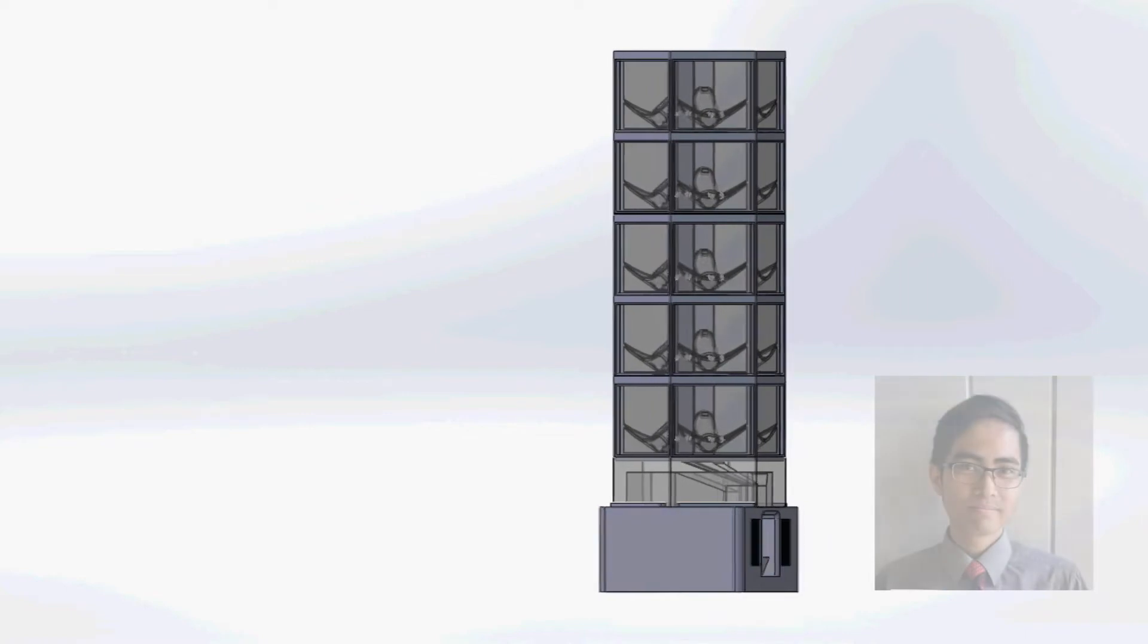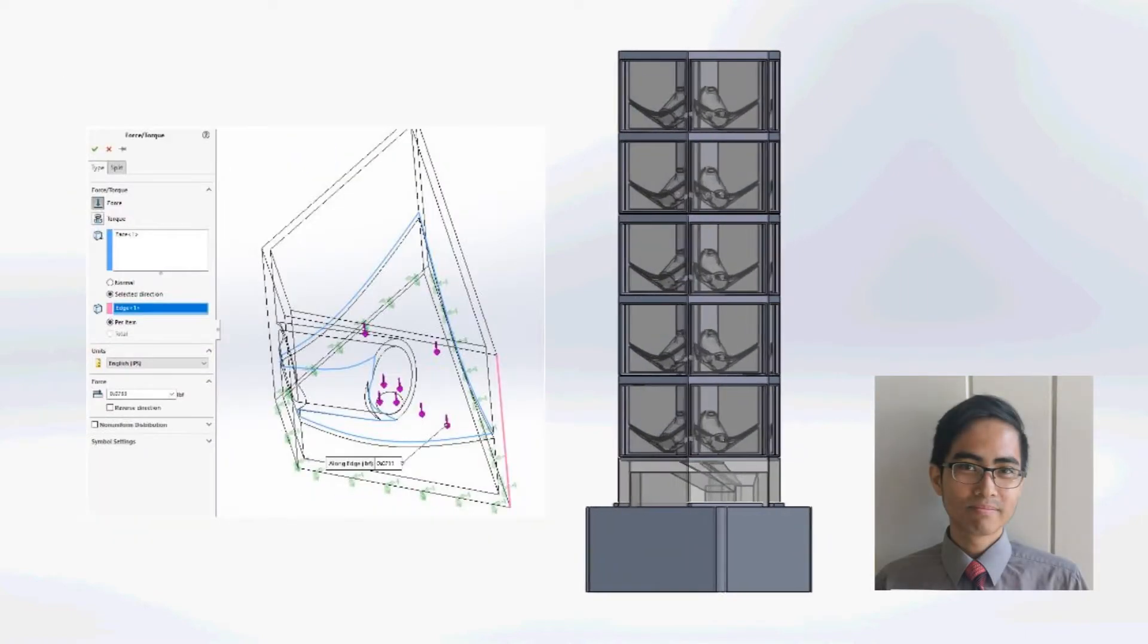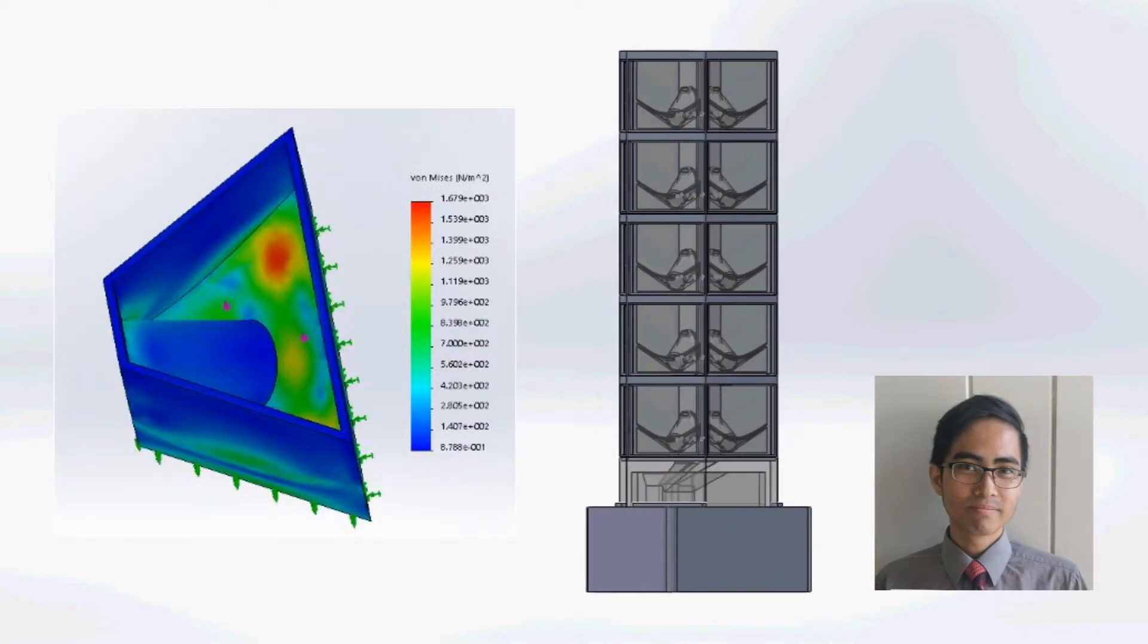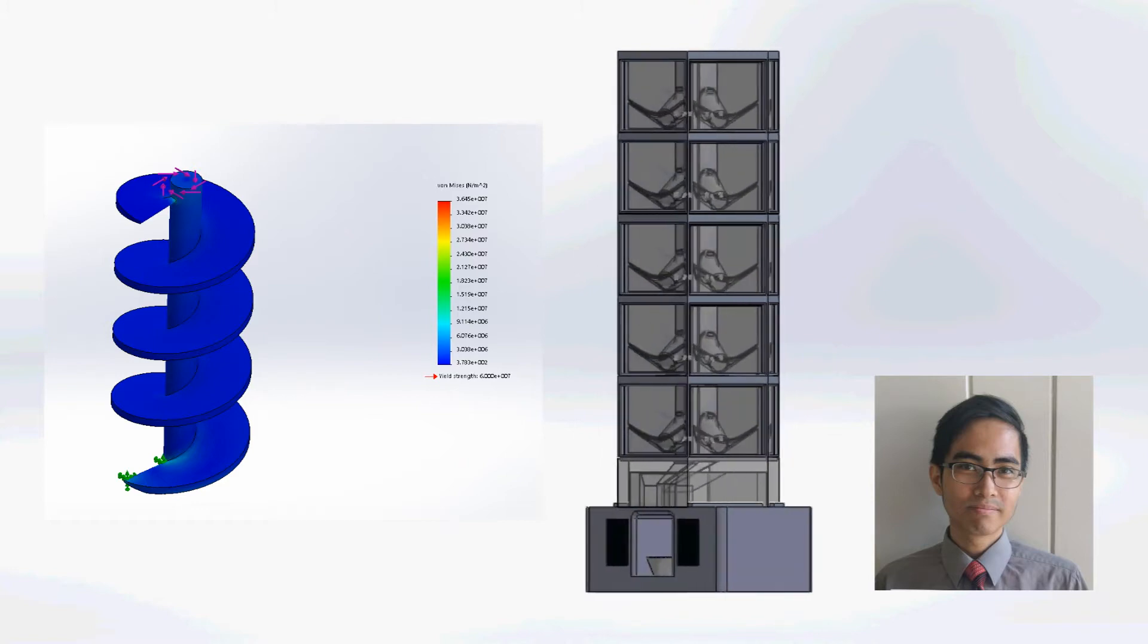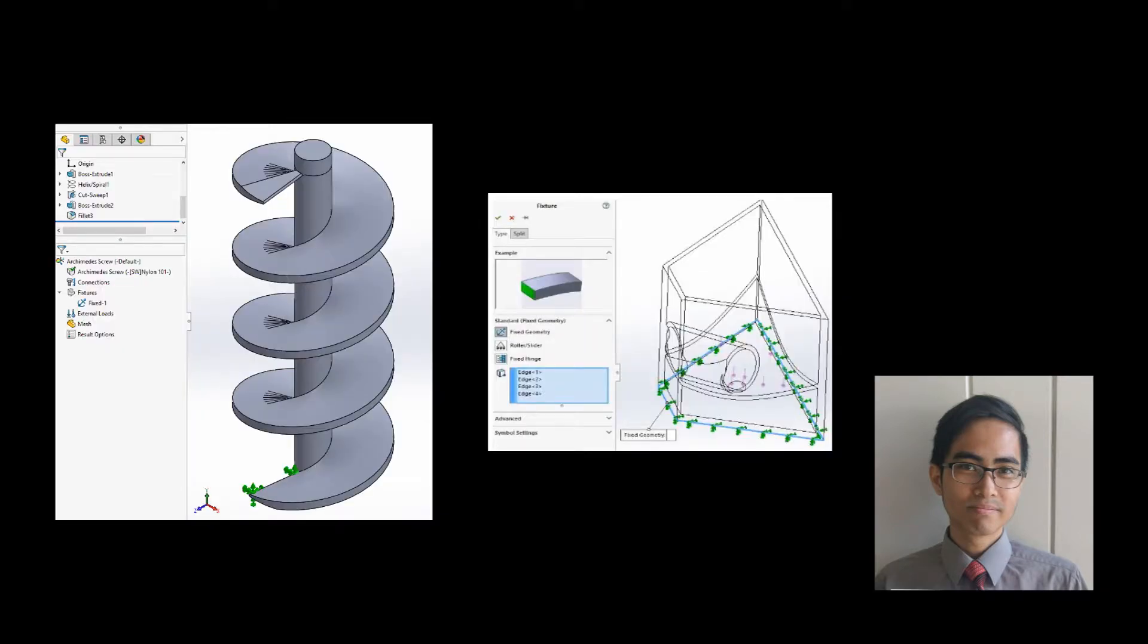The two chosen components for loading in our product were the Archimedes screw and the reservoir. These are the components that experience the external load due to the motor and pills. The Archimedes screw was made out of N-101 plastic and the reservoir was made out of ABS plastic. The two components adhere to the material properties.